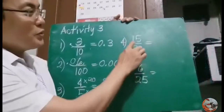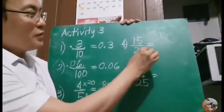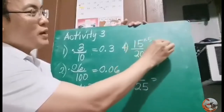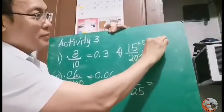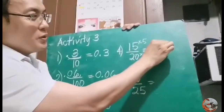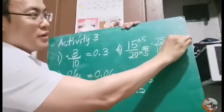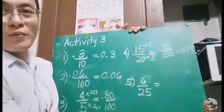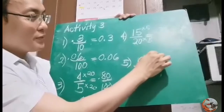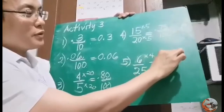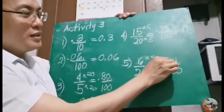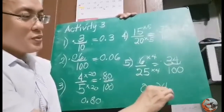For 15 over 20: multiply the denominator 20 by 5 to get 100, and also multiply the numerator by 5. 15 times 5 gives you 75, and 20 times 5 gives you 100. Move 2 places to the left since there are 2 zeros — it becomes 0.75, or 75 hundredths. So 15 over 20 equals 75 over 100. For 6 over 25: multiply by 4. 6 times 4 equals 24, and 25 times 4 equals 100. Move 2 places to the left — the answer is 0.24, or 24 hundredths.